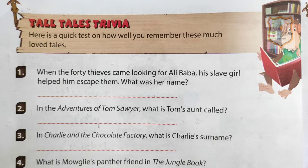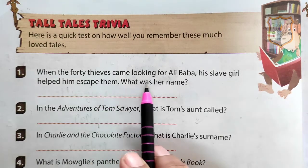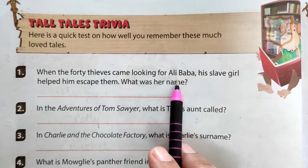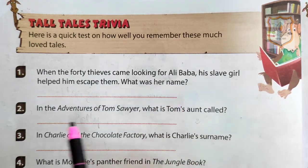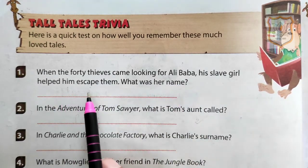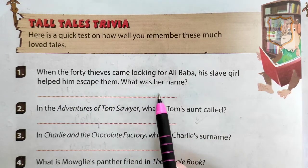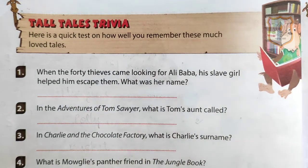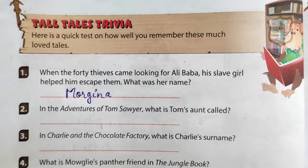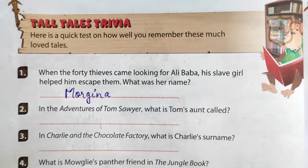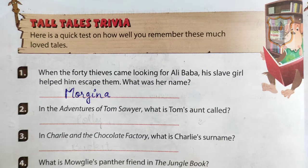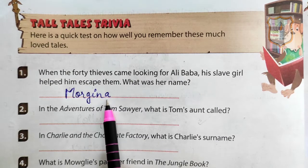First one: when the 40 thieves came looking for Alibaba, his slave girl helped him escape them. What was her name? The name of the girl was Marjina.